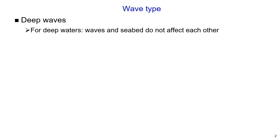There are three types of waves. The first is deep waves. For deep waters, waves and the seabed don't affect each other. Deep waves are defined when the ratio of water depth divided by wavelength is greater than or equal to 0.5.